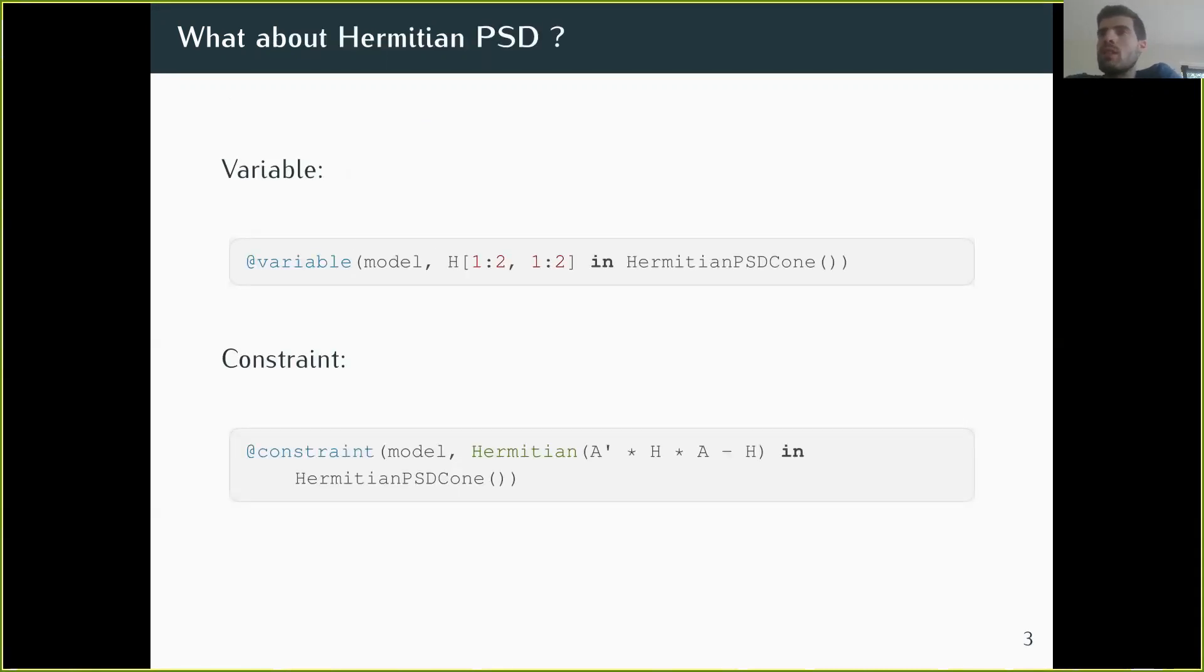You also want to be able to create Hermitian PSD matrices, which are Hermitian and PSD, and then Hermitian PSD constraints. You would say that this matrix, that could depend on your variables, is PSD. You add the Hermitian keyword from linear algebra to show that this is a Hermitian matrix that you want to be PSD, just like you would use symmetric to show it's a symmetric matrix. Jump sees that the matrix is Hermitian and doesn't have to constrain it to be Hermitian.